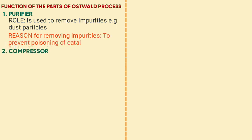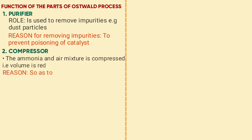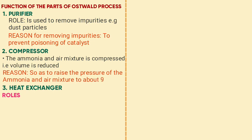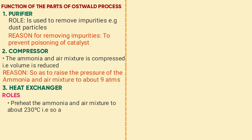The heat exchanger is used to preheat the ammonia and air mixture to about 230 degrees Celsius so that it attains a suitable reaction temperature. Another function of the heat exchanger is to cool the nitrogen oxide gas that is formed downstream.